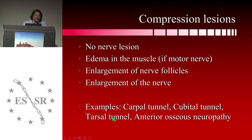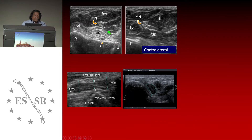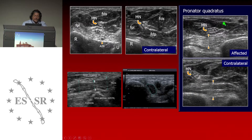Examples of compression lesions are the carpal tunnel, the cubital tunnel, the tarsal tunnel, the anterior interosseous neuropathy, and the syndrome of the flexor digital nerve. Here is a case of compression of the anterior interosseous nerve. You cannot see anything at the place where the nerve is, but you can see very clearly that there is an edema of the flexor pollicis longus and flexor digitorum profundus by comparing with the contralateral side. The pronator quadratus is also not the same on the affected side — it is hyperechoic.